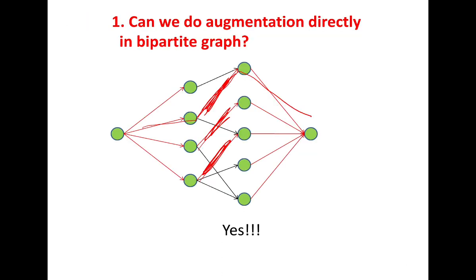The question is: do we have a better method to find the maximum matching? For this, we introduce the idea of the augmenting path. We can start with any initial matching — even a single edge — and augment it until we reach the maximum matching. First, we need to introduce the concept of an augmenting path with respect to a matching.